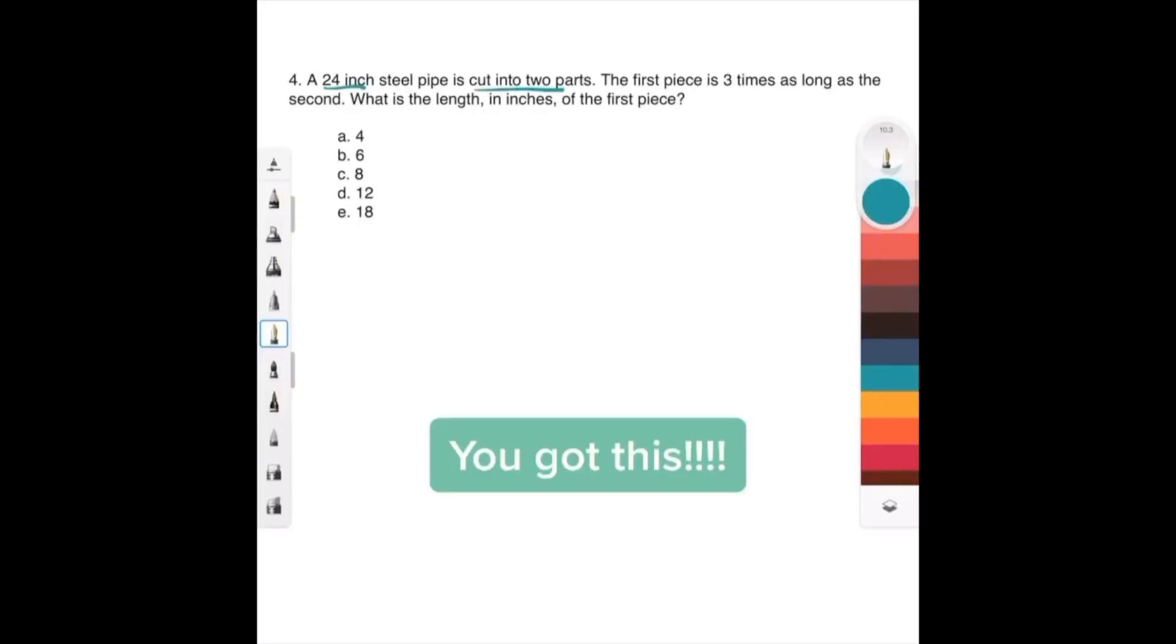A 24-inch steel pipe is cut into two parts. We'll say one part is x and another part is y. The first piece, we'll say that's our x.